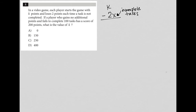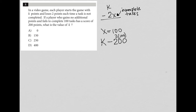The next part of this question says: if a player who gains no additional points and fails to complete 100 tasks — so X equals 100 — has a score of 200 points. So now I have an equation. That player starts off with K and then loses 200 points, because it's two times the number of incomplete tasks — two times 100. And we're saying they have a score of 200, so it equals 200.